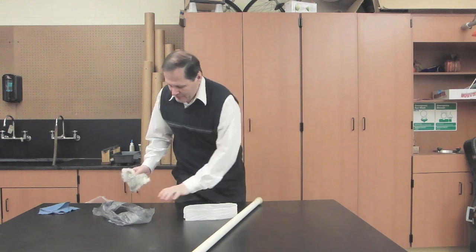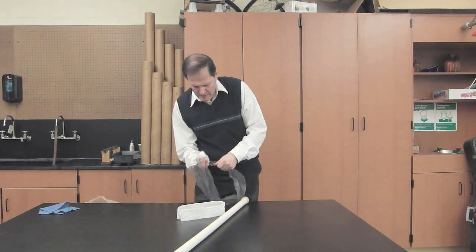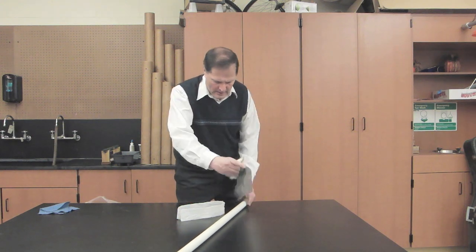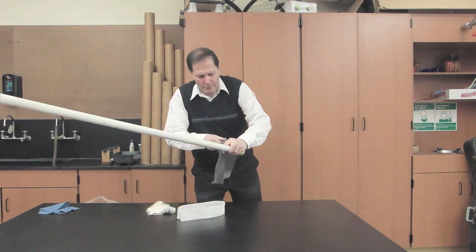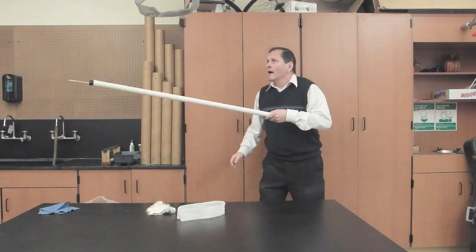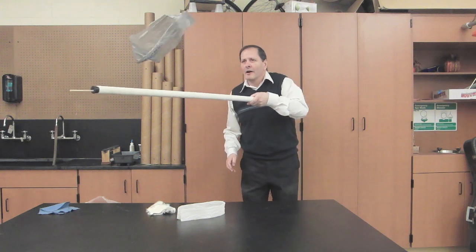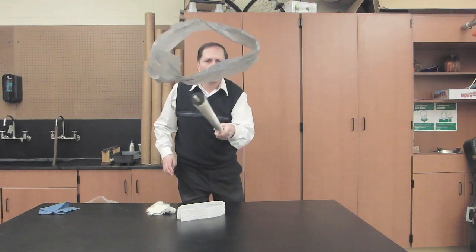Now let's try the plastic. See how that works. Again I'll rub it. And I'll rub the PVC tube. And we'll throw this up. And there we go. You can get the plastic shopping bag to levitate also.